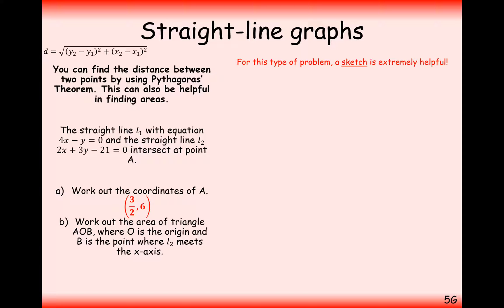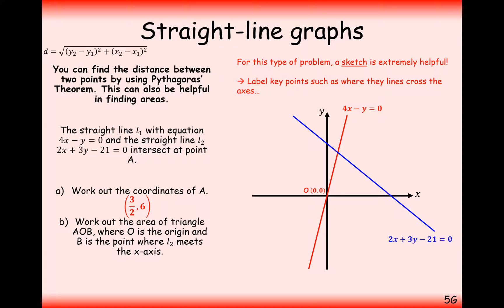So now we need to work out the area of this triangle here. So let's draw a sketch, labelling all the key points. We have these two coordinates lines here. Their intersection is at 3 over 2, 6.